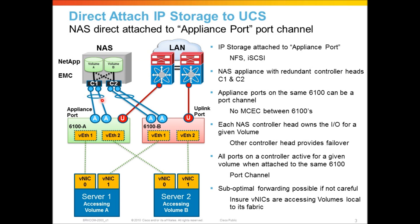We can take the two ports on controller one, bundle those into a port channel, and attach them directly to appliance ports on 6100A. Then we can do the same thing for controller two — take those two interfaces, make a port channel, and land it on two appliance ports on 6100B. This provides redundant connectivity with two different volumes defined on the NAS. We've got our UCS servers below — server one and server two, each with a pair of VNICs — and these VNICs would be used for NAS or NFS traffic.